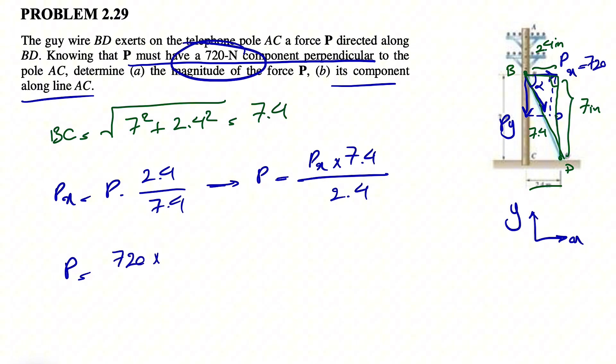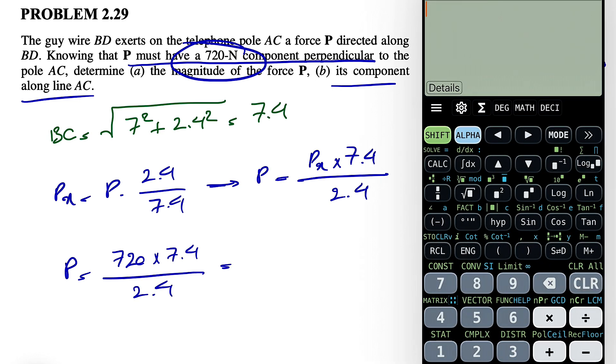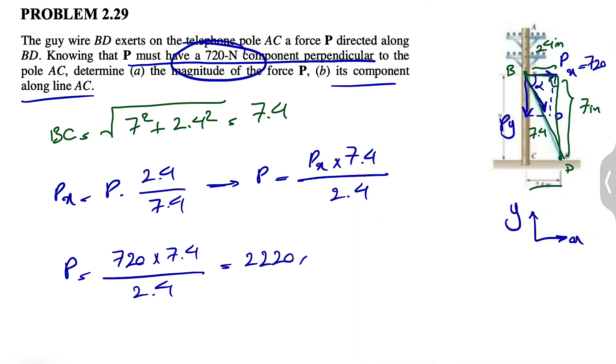So 720 times 7.4 divided by 2.4. 720 times 7.4 divided by 2.4. So it's going to be 2,220, and the force is in Newtons. So that's the answer for part A where we needed to find P.